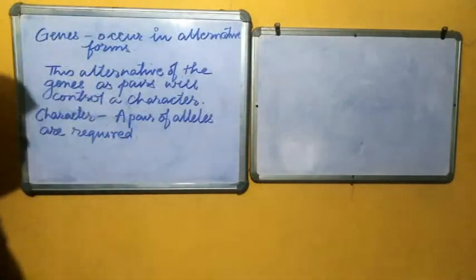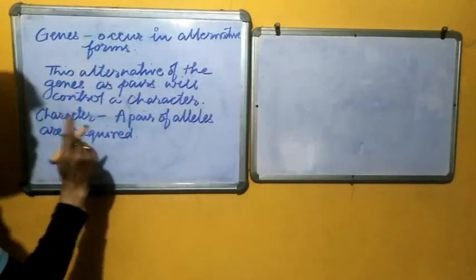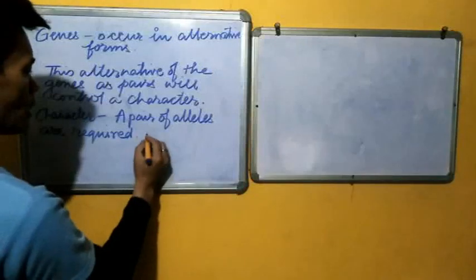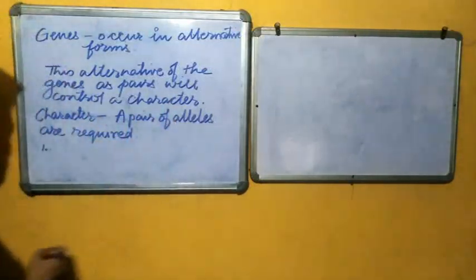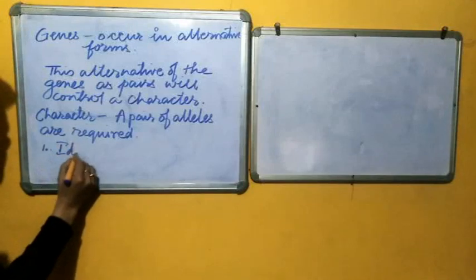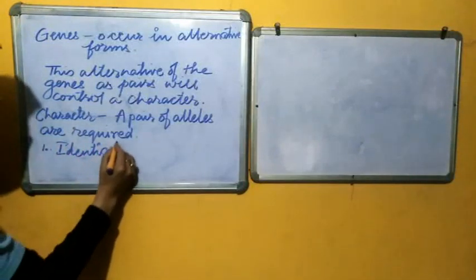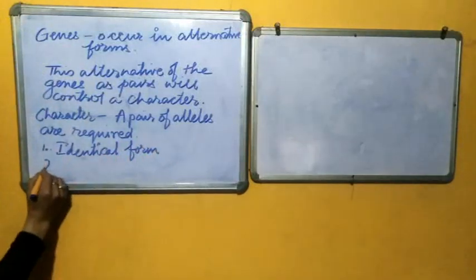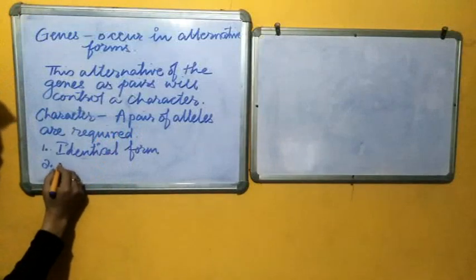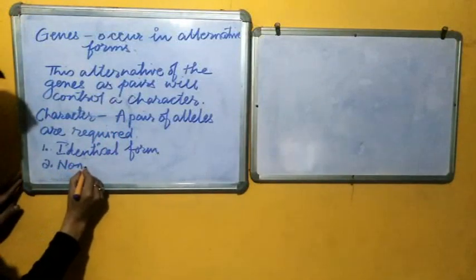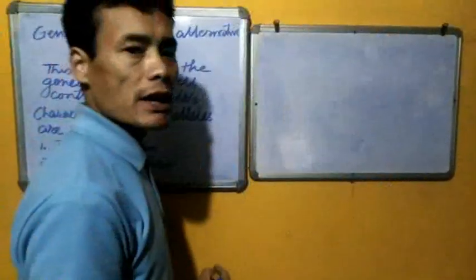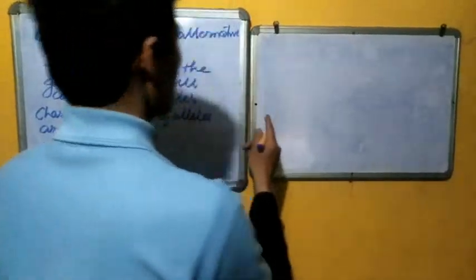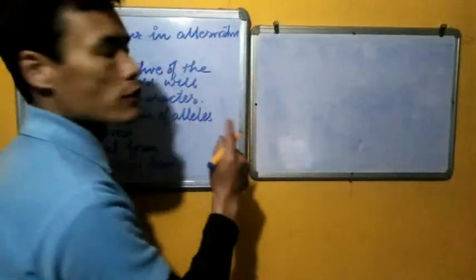However, this pair of alleles which expresses a character can be in two forms. Number one, the pair of alleles can be in an identical form. Or the pair of alleles can be in a non-identical form. Now, I would like to give you an example by which we will understand a homozygous and a heterozygous condition.